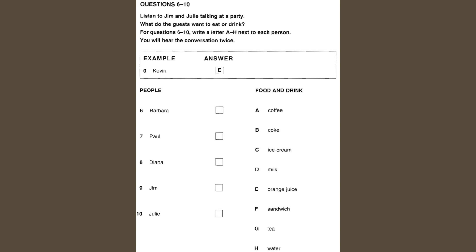Now look at part two. Listen to two people talking at a party. What do the guests want to eat or drink? For questions six to ten, write a letter A to H next to each person. You will hear the conversation twice.